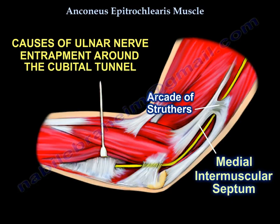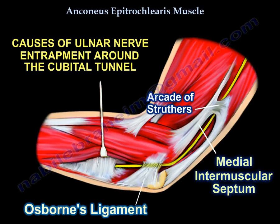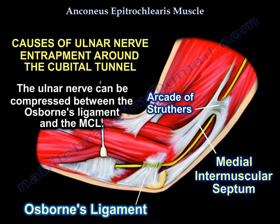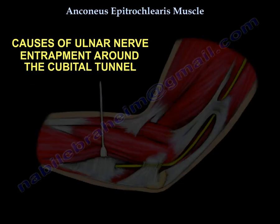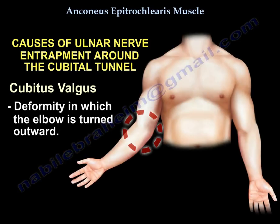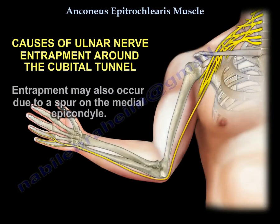Another area of compression is the medial intramuscular septum. Additionally, the ulnar nerve can be compressed between the Osborne ligament and the MCL. Compression may also occur from elbow deformity such as cubitus valgus, or due to a spur on the medial epicondyle.